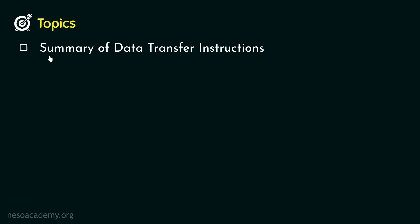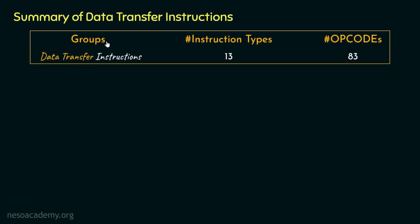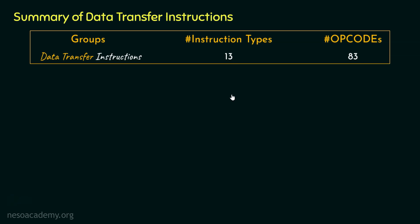Today's topic is the summary of data transfer instructions in the 8085 microprocessor. At the very beginning of this chapter I told you there are seven groups of instructions in the 8085. From those groups, the first group we chose was data transfer instructions. I also told you there are 13 instruction types and cumulatively 83 opcodes — today I'm going to verify that claim and revise the different instruction types.